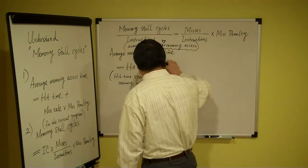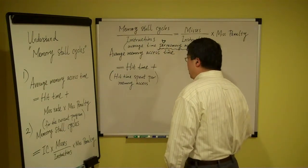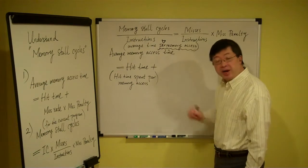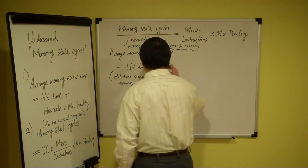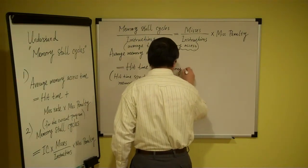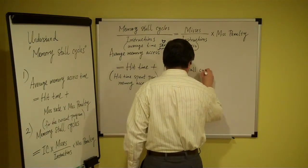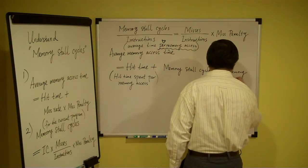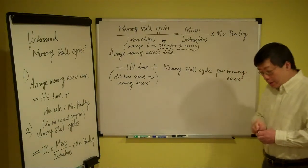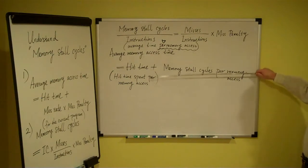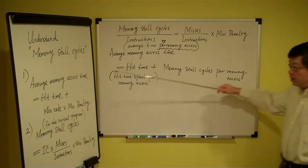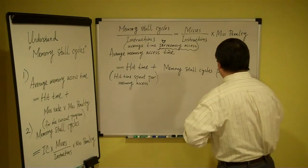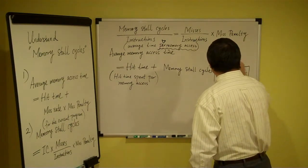So now we are ready to write the correct term. Because our base here is per memory access, the term here should also be per memory access. So that it should be: memory store cycles per memory access. This is the right way to write the relationship between these two formulas. The key part we add is 'per memory access' — we cannot miss it.